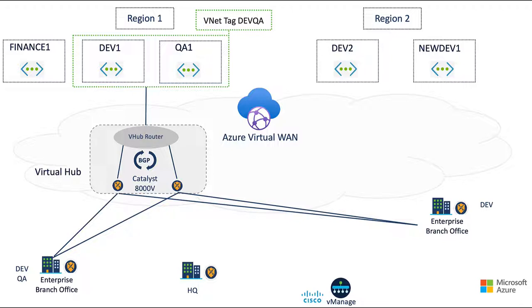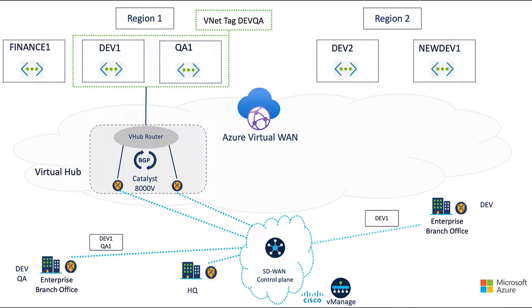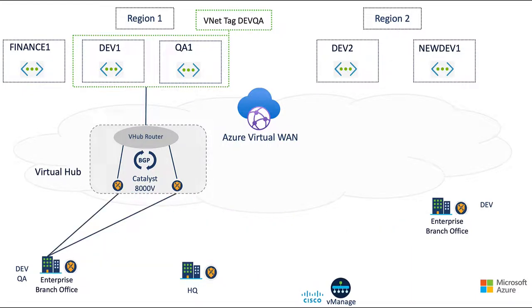We can further restrict traffic by using centralized policies. In this example, only the dev QA branch should have access to the QA workloads. Our virtual hub is still learning the tagged VNet prefixes and using BGP to exchange those routes with our Catalyst 8000v routers inside the virtual hub. Using our separate secure SD-WAN control plane and centralized policies, we can block the QA routes from being advertised to the dev-only branch, allowing our dev QA branch access to the QA workloads and vice versa.